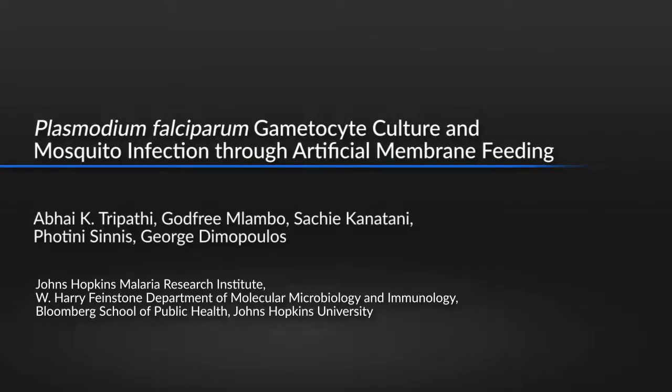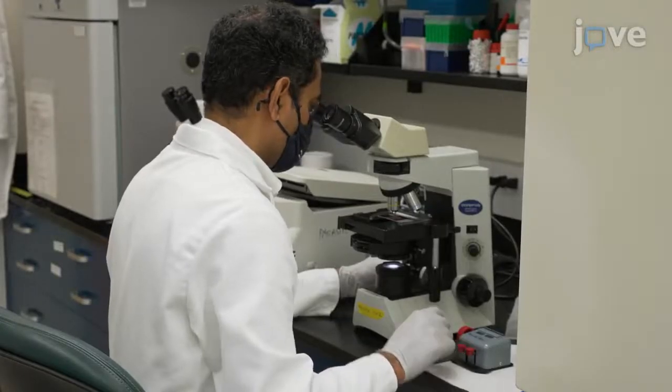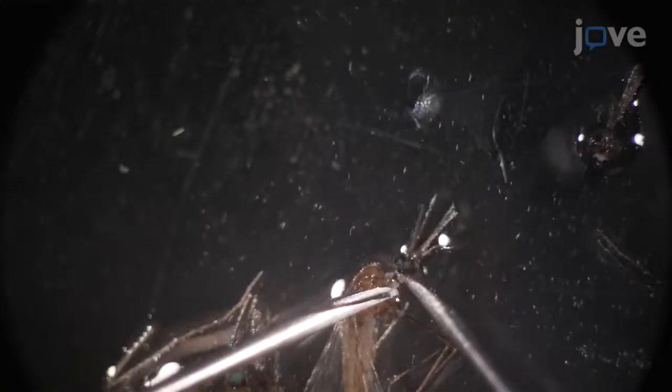Gametocytes are responsible for malaria parasite transmission. Generating infectious gametocytes in the lab is key to studying transmission biology and mosquito stages, and to generating sporozoites for liver stage research. These methods are simple for any laboratory to adopt, and visual demonstration will aid in the sharing of these procedures with the worldwide malaria community.